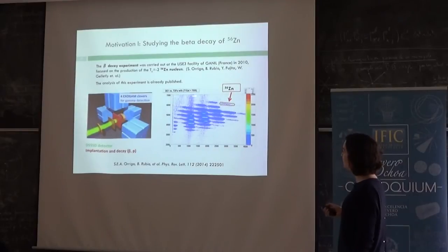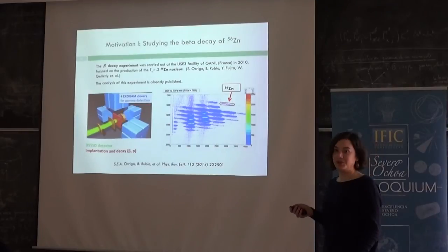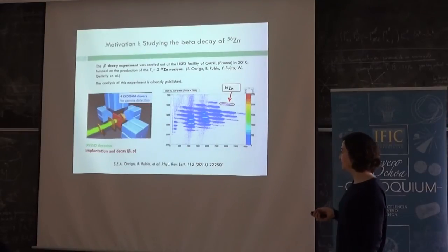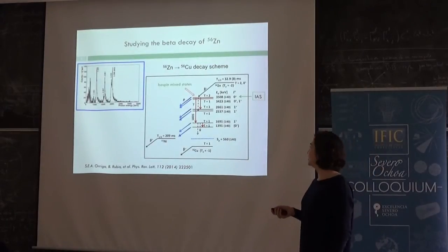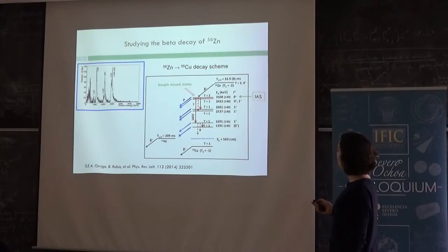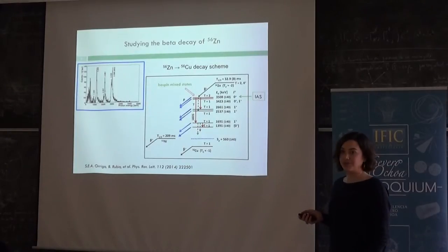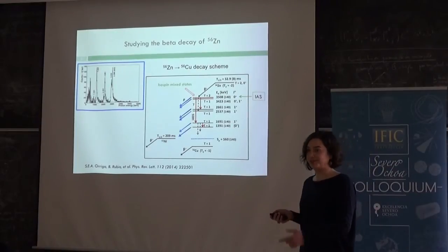You see here all the nuclei that were produced at the experiment. And because it was very exotic, our nucleus, it was the one you see that there is not so much statistics. And the analysis of this experiment is already done and published in Physical Review C. So I will try to explain the main ideas of this work. You see here, the experiment was focused on the beta decay of the 56-zinc that was decaying into copper-56, which is the mirror nucleus of the 56-cobalt that is the nucleus I will talk about in a little bit.